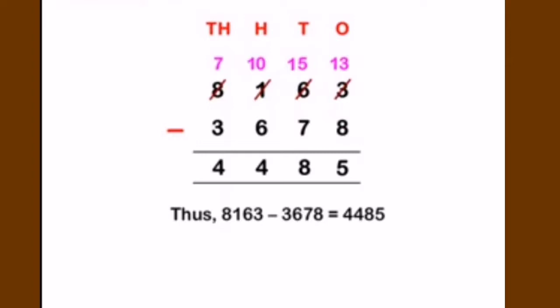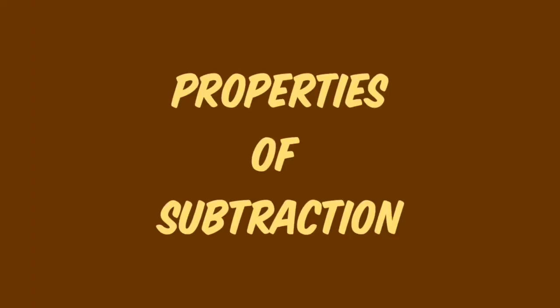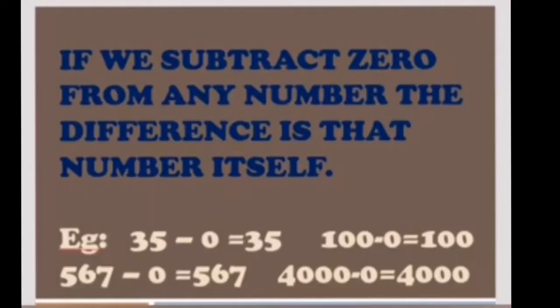7 minus 3 is 4. So finally, 8163 minus 3678 is equal to 4485. Next topic is properties of subtraction. The first is the zero property: if we subtract 0 from any number, the difference is the number itself.